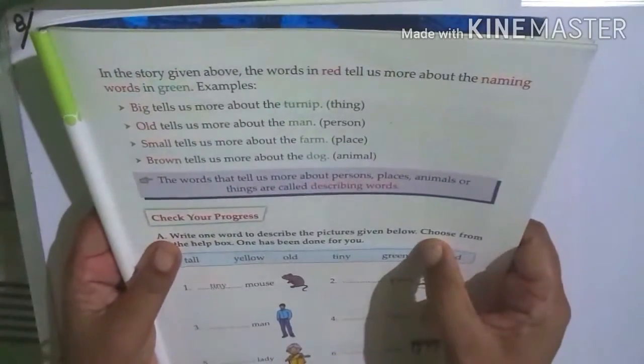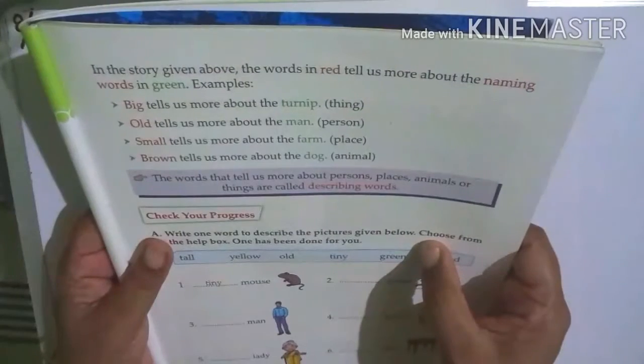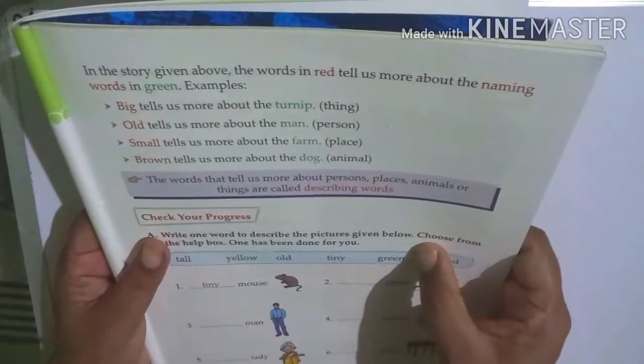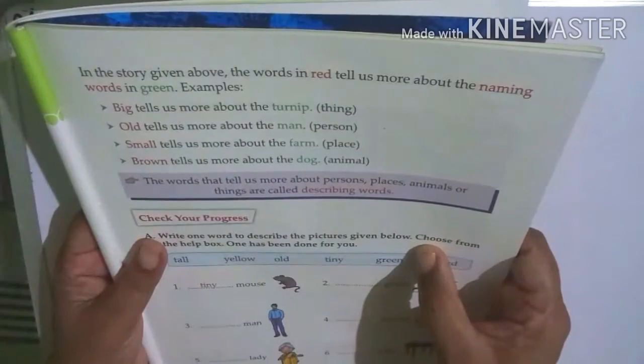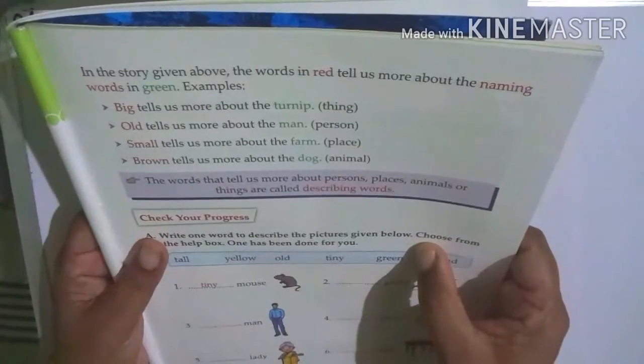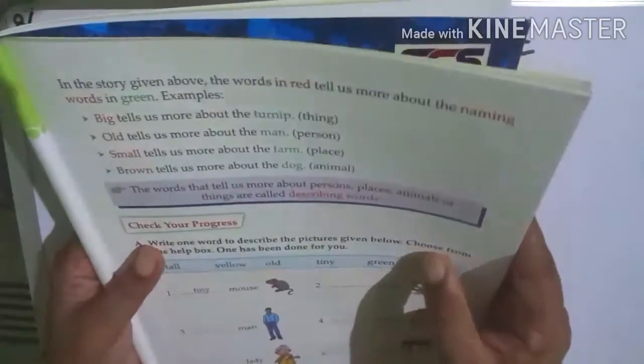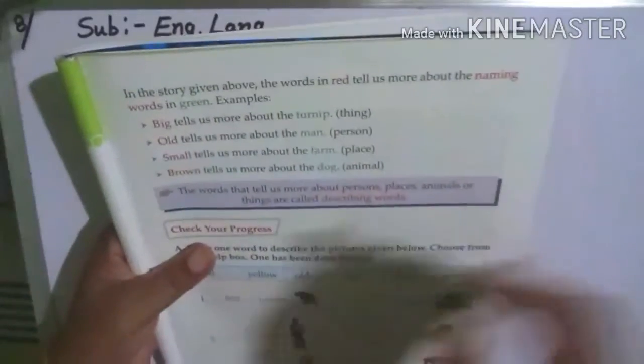In the story given above, the words in red tell us more about the naming words in green. See, words in red tell us more about the naming words in green. Example.